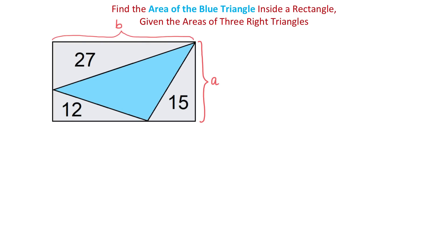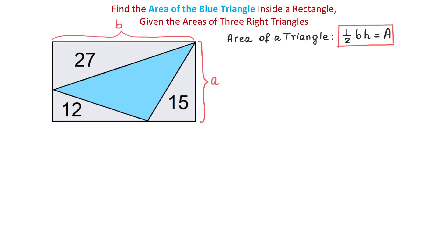Now let's take a look at the triangle whose area is 27 square units. One of the formulas for finding the area of a triangle is one half times base times height. In this triangle we can say that the base is B and let this height be x. Then we can write that one half times B times x equals 27.